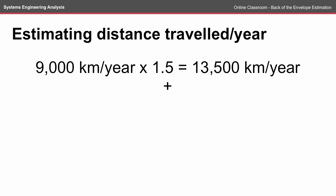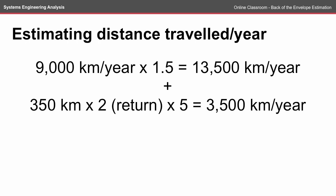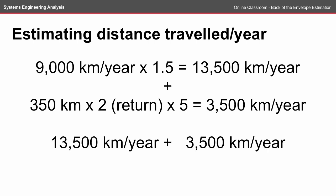We might also need to add a number of trips, say up to Sydney. Estimating about 350 kilometers including travel at either end, multiplied by 2 for a return trip, and say five trips per year, that adds an extra 3,500 kilometers per year. So the total kilometers per year might be more like 17,000 kilometers per year.